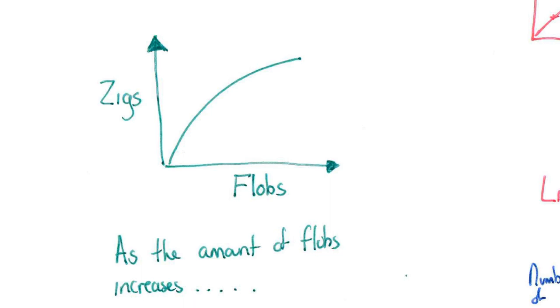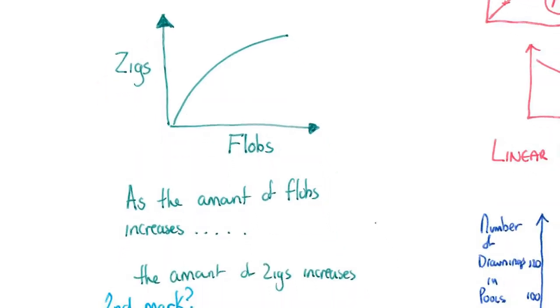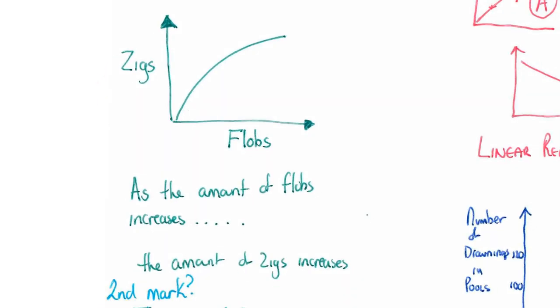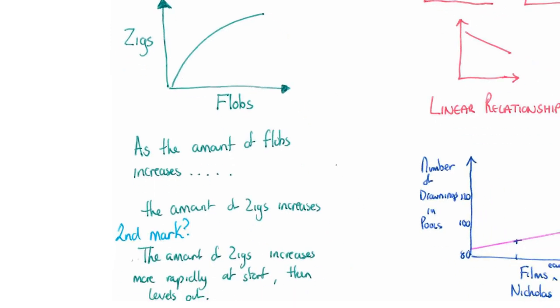Right, so in this case, what you'd say is as the amount of flobs increases, what happens to the zigs? Well, the zigs increase as well. Now, how are you going to pick up the second mark? Because there's normally two or three marks here. Well, the second mark is for recognising the fact that it changes. So the second mark, talk about the changes in the graph. So the amount of zigs increases more rapidly at the start, then levels out would get you the second mark.